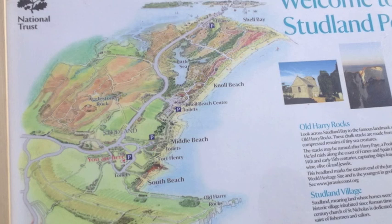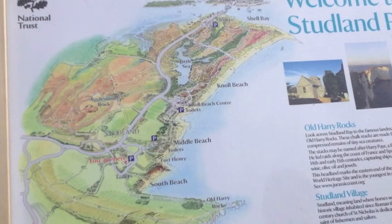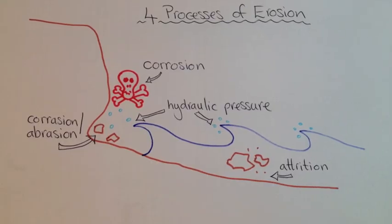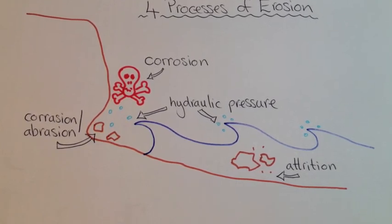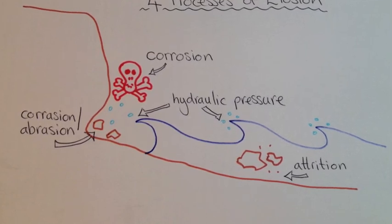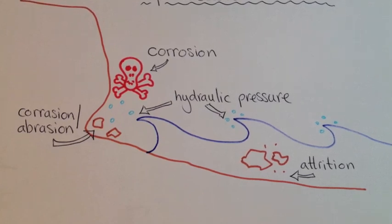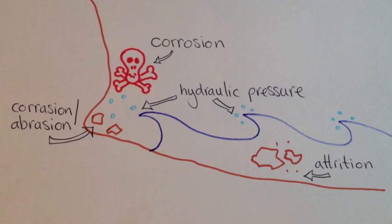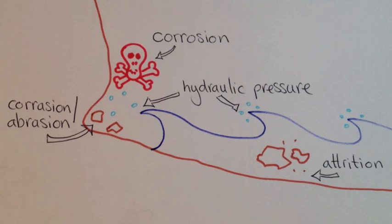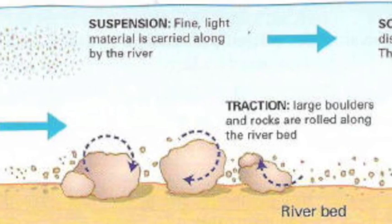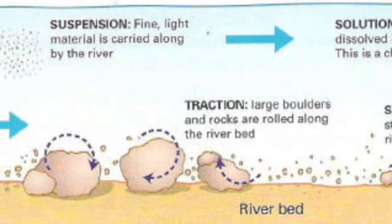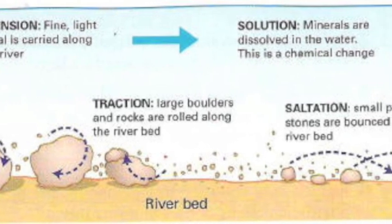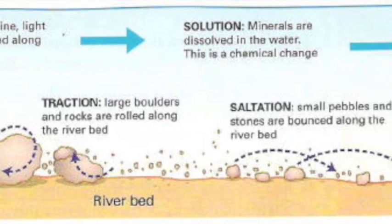Don't just use this podcast for your revision — do make active use of your own notes, textbooks, revision guides, and other web-based resources. The three processes found acting at the coast are: erosion, the wearing away and removal of rock; transportation, the movement of sediment; and deposition, the dumping of sediment. For a top level answer you should be able to refer to different types of erosion: hydraulic action, abrasion or corrasion, corrosion, and attrition. Make sure you can define each type. Equally, there are four ways that beach sediment can be transported: traction, saltation, suspension, and solution.